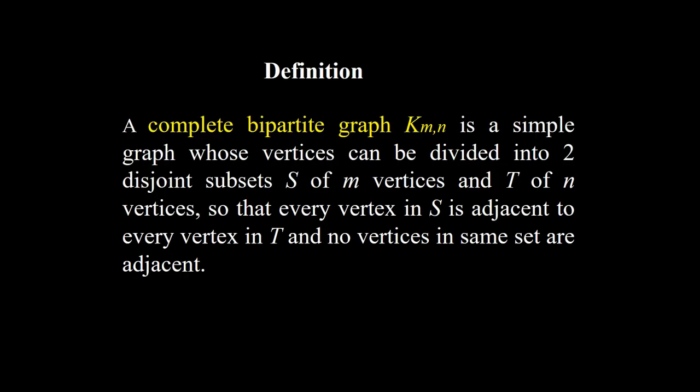A complete bipartite graph, denoted by K_mn, is a simple graph whose vertices can be divided into two disjoint subsets S of m vertices and T of n vertices, so that every vertex in S is adjacent to every vertex in T, and no vertices in the same set are adjacent.